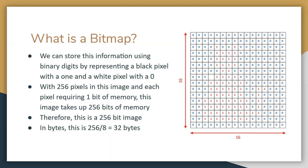If you remember, there are 8 bits in 1 byte. So if you wanted to convert this 256-bit image into bytes, all you do is divide by 8, and you see that this is 32 bytes.